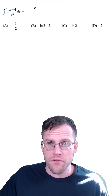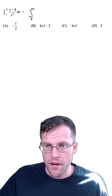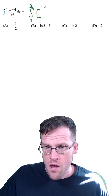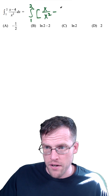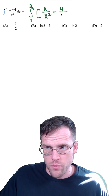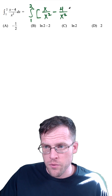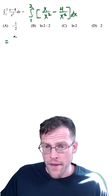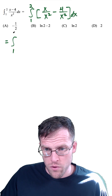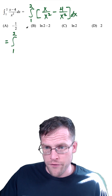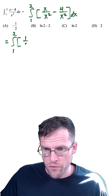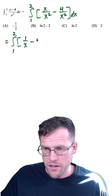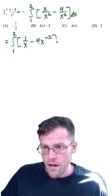To evaluate this definite integral, first we could rewrite it as the integral from 1 to 2 of x over x squared minus 4 over x squared. And then from here, we just have to do a little bit of algebra. So we're going to rewrite this now as the integral from 1 to 2. The first fraction we could simplify as 1 over x, and the next one we'll write as minus 4x to the negative second.